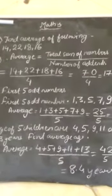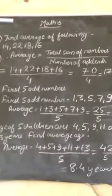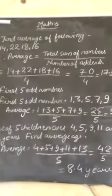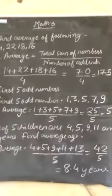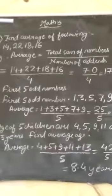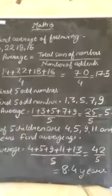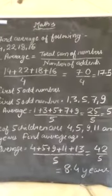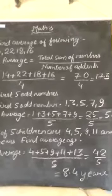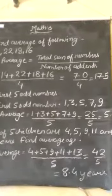Our first 5 odd numbers will be 1, 3, 5, 7, 9 then we add 1, 3, 5, 7, 9 and divide by 5. After adding 1, 3, 5, 7, 9 it will be 25 when divided by 5 it will be 5. Means our average of first 5 odd numbers will be 5.